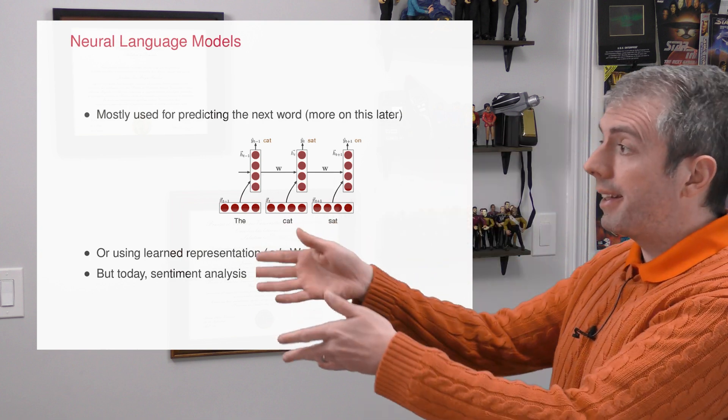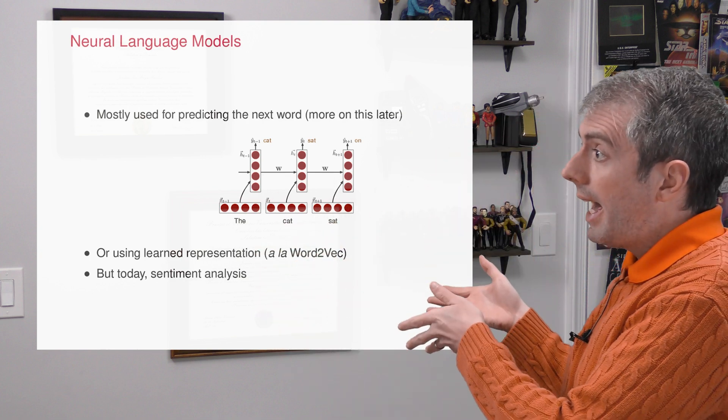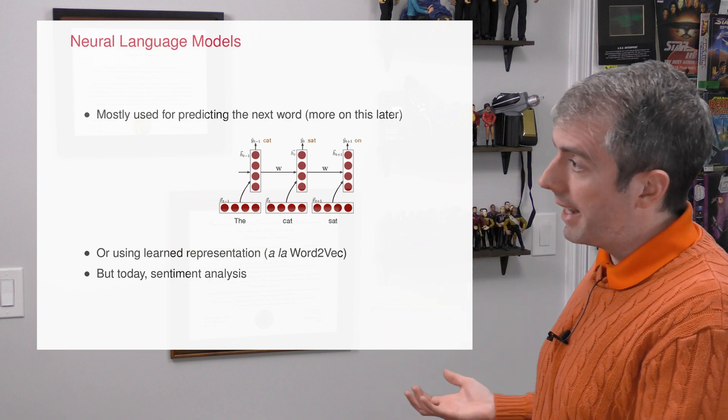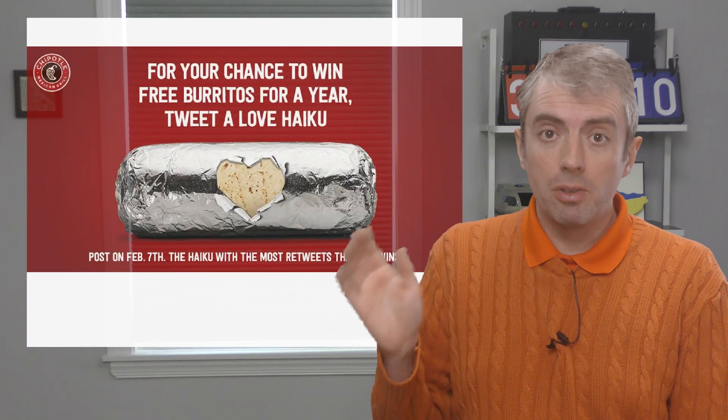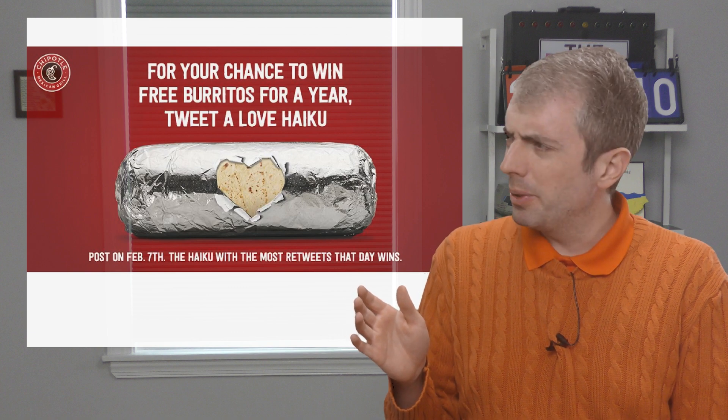This is a fairly common NLP task. Piece of text comes in, and you need to say whether it has positive sentiment or negative sentiment. Imagine that you're the best burrito chain to come out of Colorado. No, not that one.